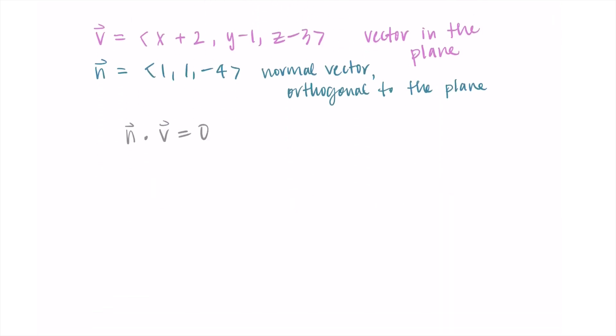So given this information, I can put in my vectors for n and v, and solve. So my n is 1, 1, negative 4, and I'm dotting it with my v vector. So just this written as is, this dot product, this is technically the vector equation of the plane. As I mentioned before, this doesn't look like a whole lot, and this isn't really our final answer, so we're typically going to go one more step and find the scalar equation of the plane.